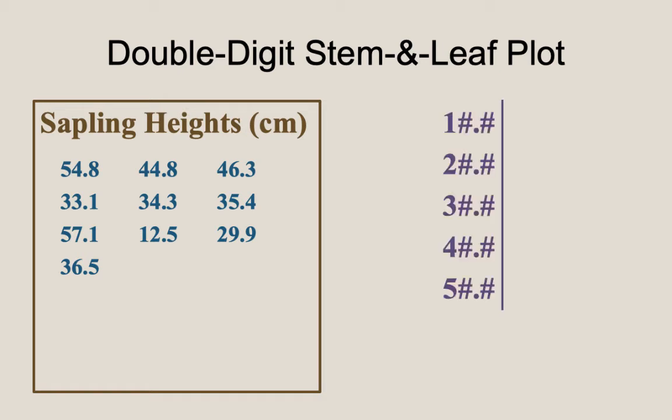However, as we have more precision in our data, we will actually use two digits for a single leaf, where each leaf represents a single value in the data set. And the notation of the stems indicates that there are two digits in each leaf, because there are two hash symbols in the stems.